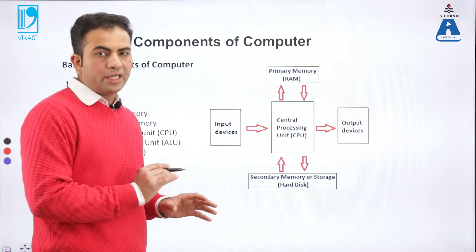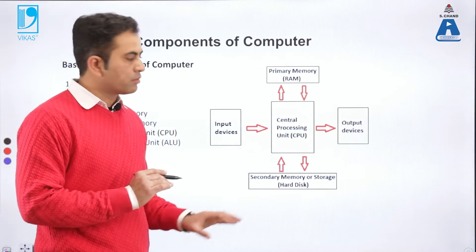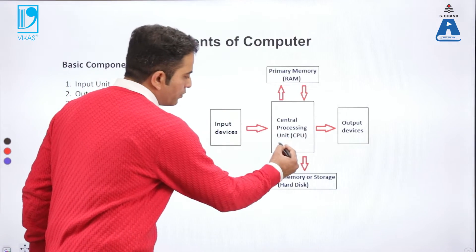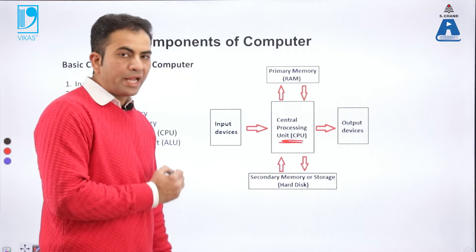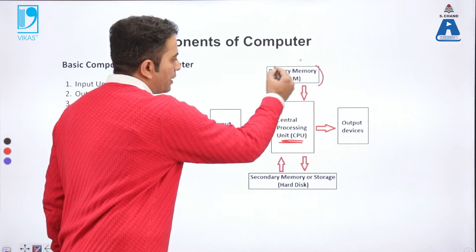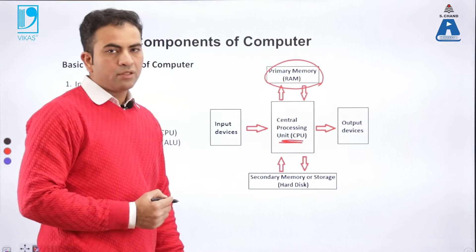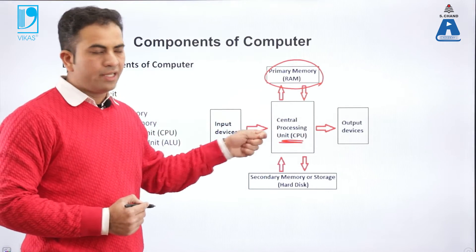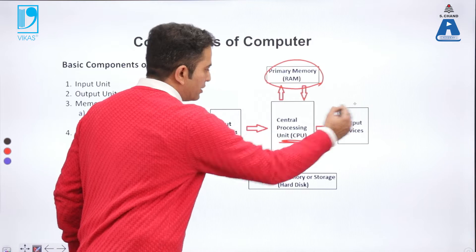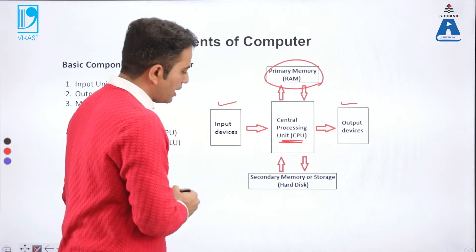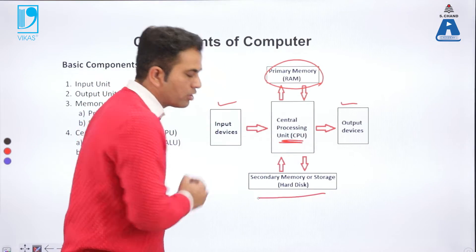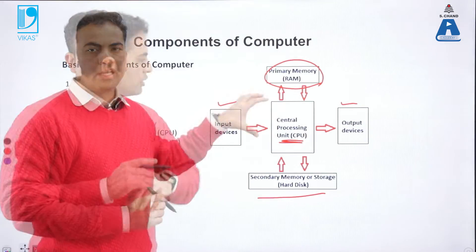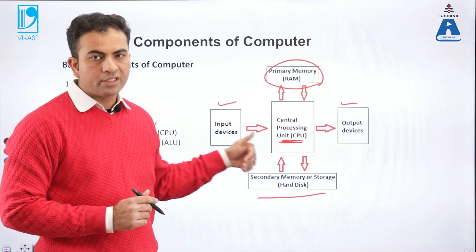These are the components of the computer system. Every computer system consists of these basic components: the CPU, which is the brain of our computer; primary memory, which is RAM; output devices; input devices; and our hard disk or permanent storage devices. All these devices are connected with each other, and the CPU controls all the devices together.